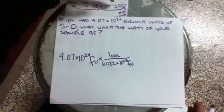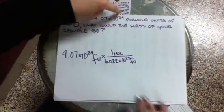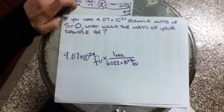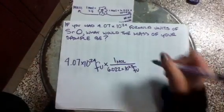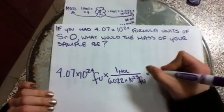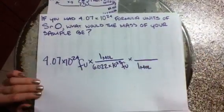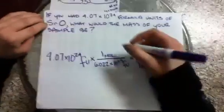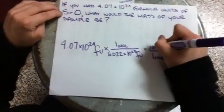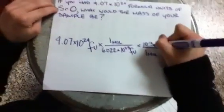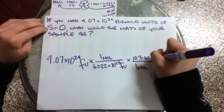Then you have to do one more conversion factor to get to the mass. With 1 mole, you use the mass of your substance, which is SrO. When you calculate the mass out, it comes to 103.62 grams.